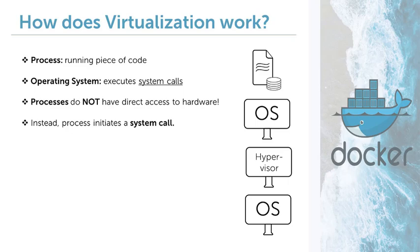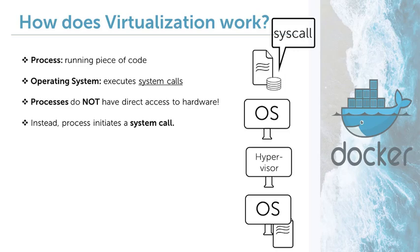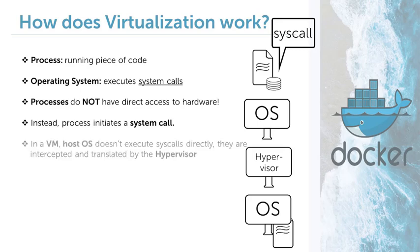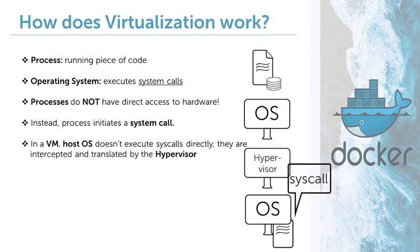Once again, our process is running, doing great things. We have done some important calculations and need to save our progress in a file. So the process, being mannered and following the relevant protocol, initiates a system call to open a certain file. In this situation, the operating system doesn't jump in as usual, but rather our virtualization software, also called our hypervisor, notices the system call and springs into action.